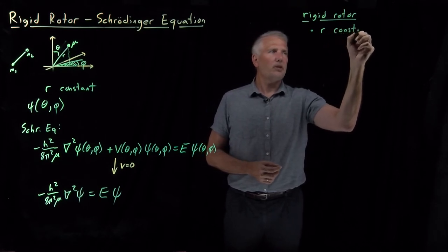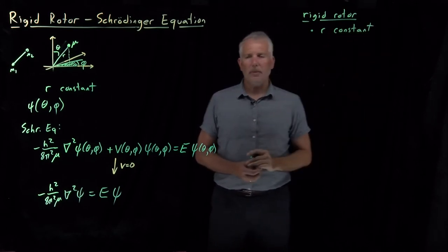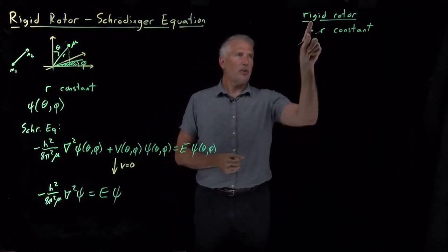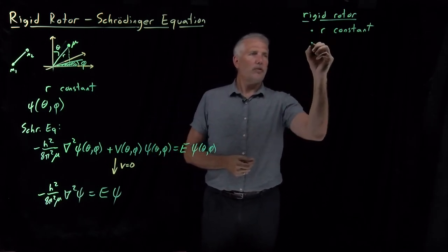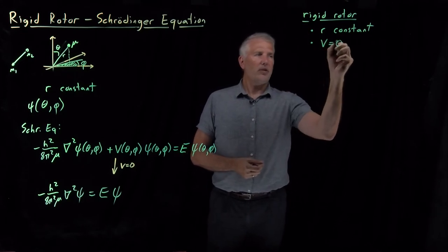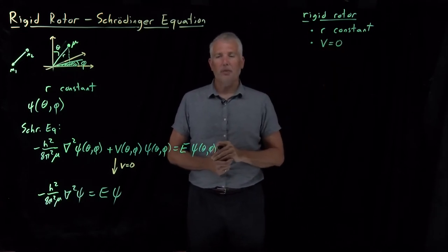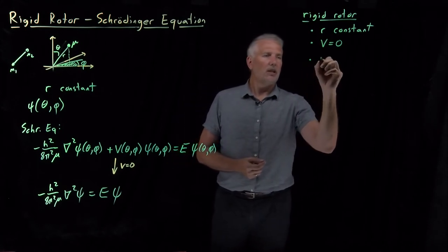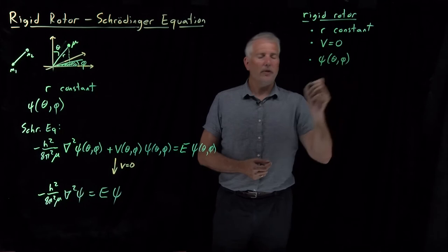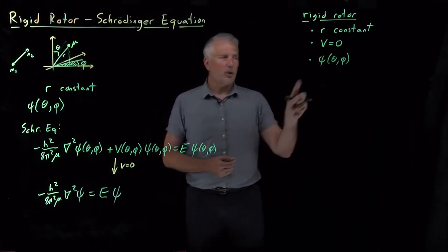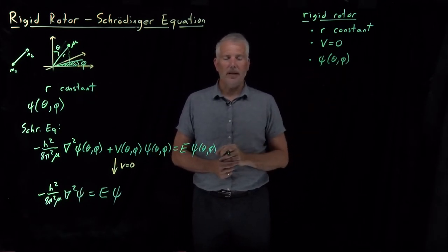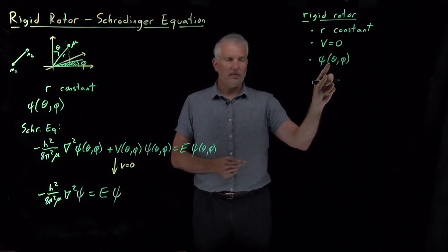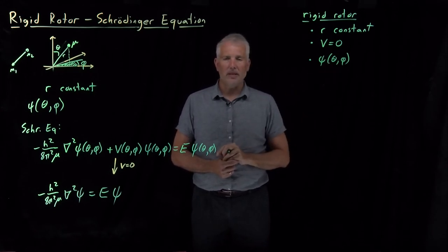To summarize the rigid rotor model: we assume the bond length is constant — the molecule stays rigid as it rotates, hence the name. We assume potential energy is zero, the same assumption as the particle in a box. That leaves only two variables, theta and phi, so our wave function depends on theta and phi — a reminder that we're working in spherical polar coordinates rather than x, y, and z.